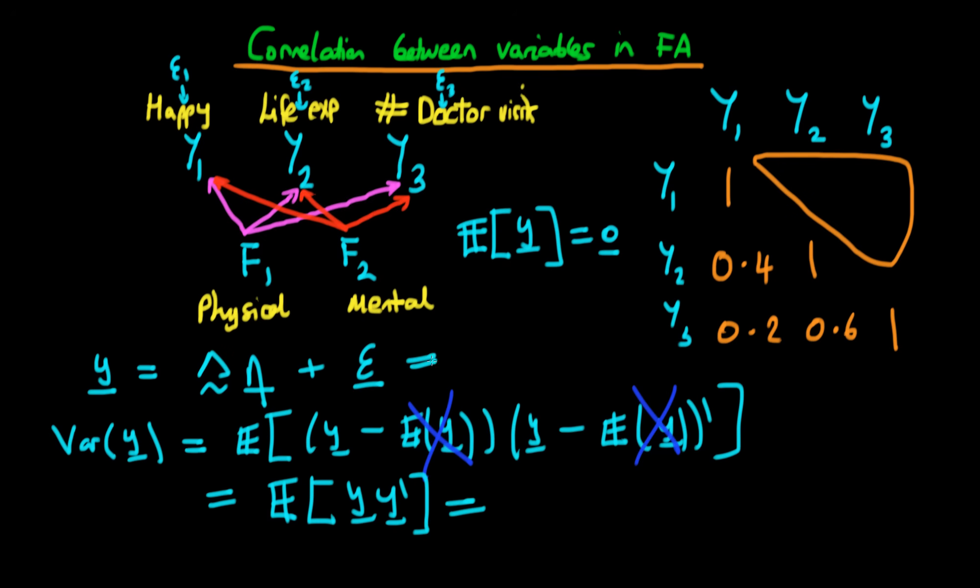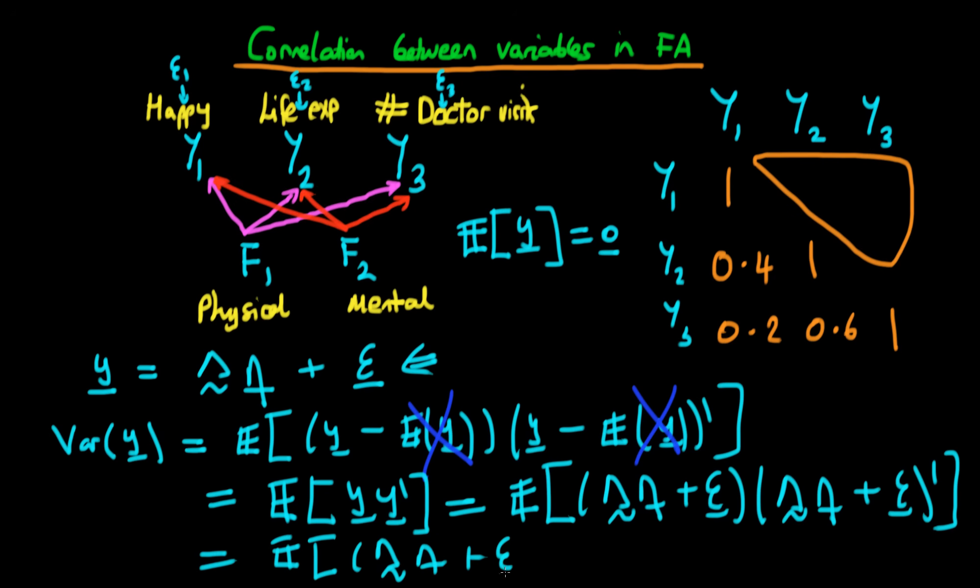We can use our model in order to work on this a little bit further. This is just the same as the expectation of lambda times eta plus epsilon times lambda eta plus epsilon, all transposed. Then what we can do is we could essentially take the transpose of the second bracket. So the first bracket just remains the same. That's just the expected value of lambda times eta plus epsilon times the second bracket, which is essentially when you apply the transpose to a sum, then it's just the same as the transpose applied to each of the individual elements in the sum.